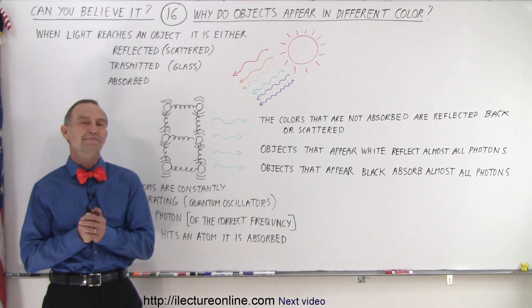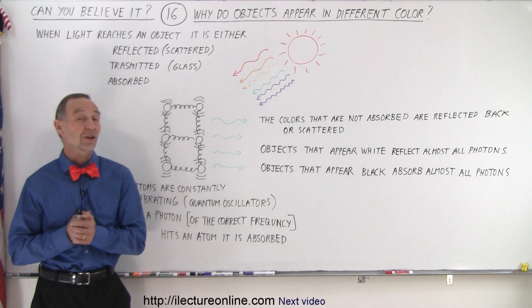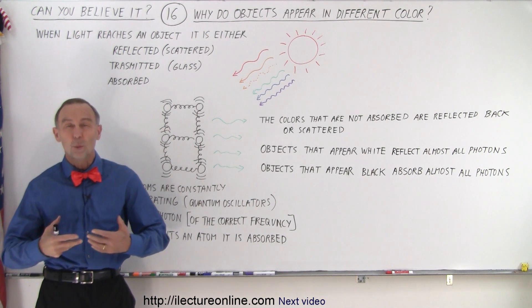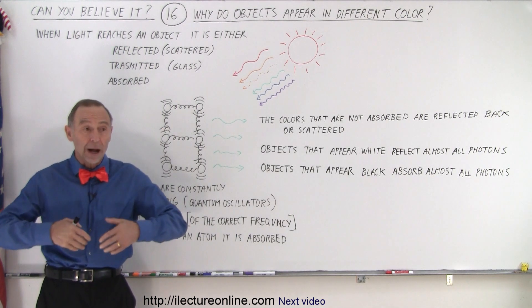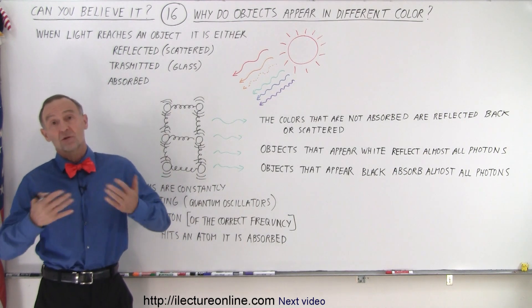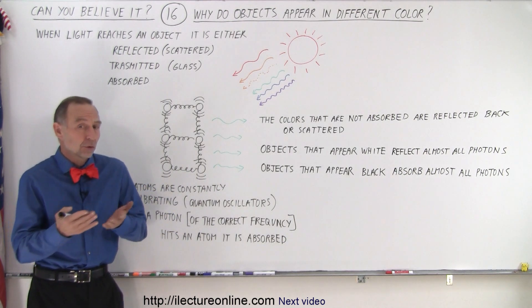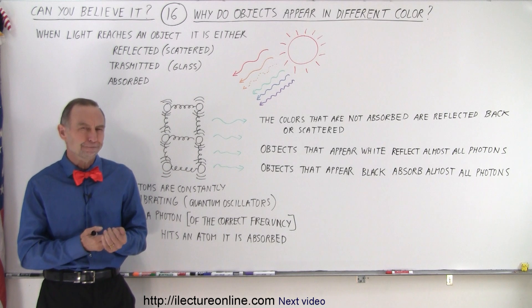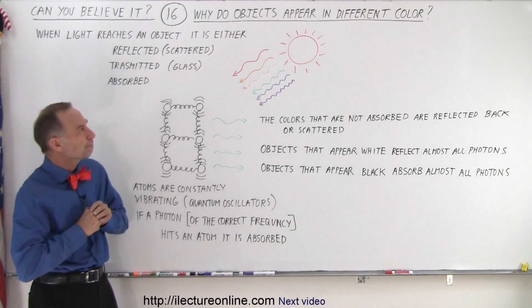Welcome to ElectronLine. Now let's ask the question and try to answer the question: why do we see colors? Why do objects have different colors? What is it about objects where one looks green, the other one looks blue, the other one looks yellow? Well, let's talk about it.